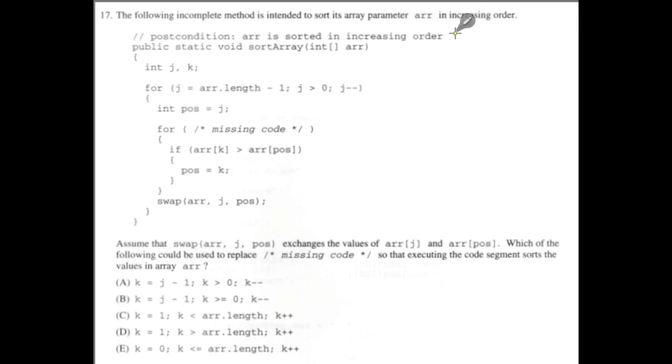I'll go through this line by line and decode it. First here, pay attention when you do these questions to these post and preconditions. They can actually be very helpful. This tells us the array is sorted in increasing order, from low to high.